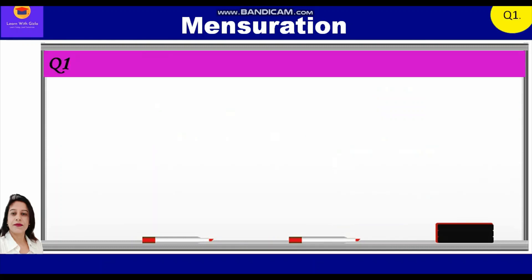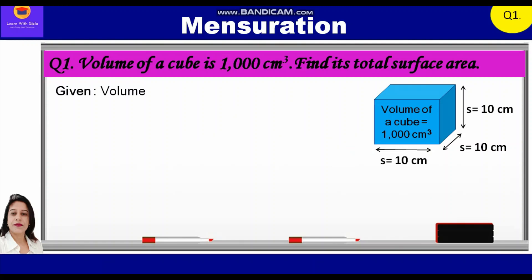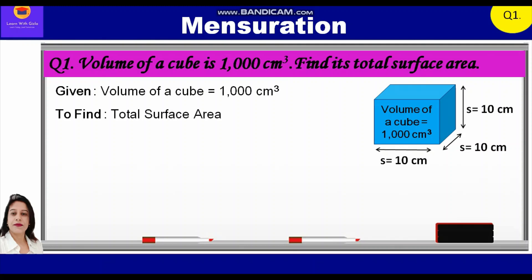Question 1: The volume of a cube is 1000 cm³. Find its total surface area. Given in this question, volume of the cube is equal to 1000 cm³, and we need to find the total surface area of this cube. Let's start with the solution. Volume of a cube is equal to 1000 cm³.